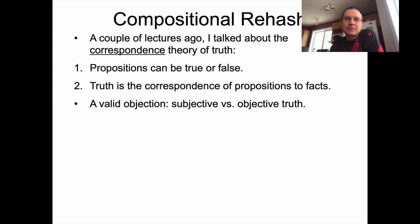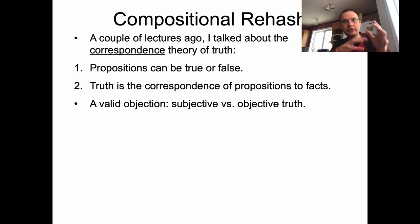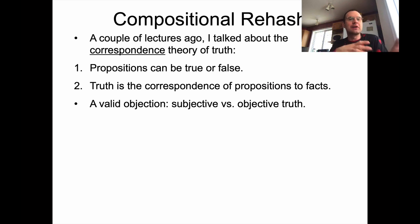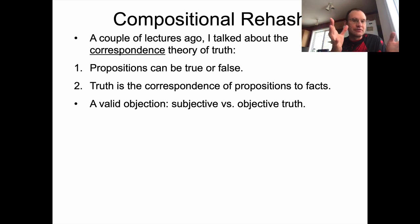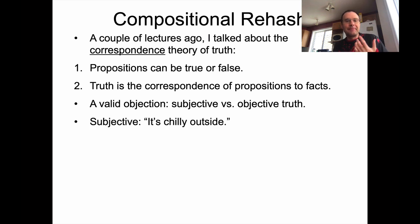Propositions have either a truth value of true or false. So truth is the correspondence of propositions to facts — that's a nice way to summarize that theory. Some students have rightly objected that this is maybe an oversimplification, because it's a question of what exactly you mean by the world of objective facts, and how do we know that a proposition matches up with the way the world actually is. There are objective truths we can agree on, and also subjective truths. For instance, a subjective truth would be if you say it's chilly outside.